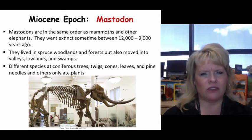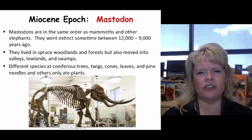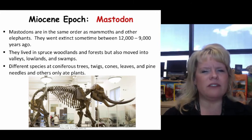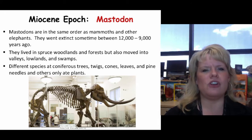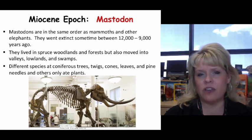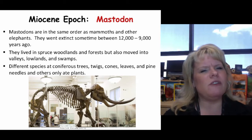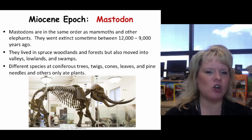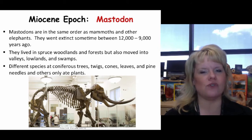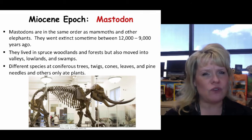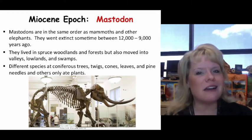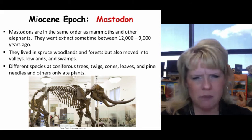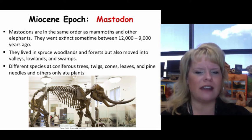Something that evolved in the Miocene and is worthy to talk about is the mastodon. These are in the same order as mammoths and elephants, and they coexisted with mammoths. They went extinct somewhere between 12,000 and 9,000 years ago — near the end of the last ice age. They lived in woodlands like spruce forests but could move into valleys, lowlands, and swamp areas. Unlike mammoths, which were grass eaters, mastodons had a different shaped tooth and straight-out tusks, compared to the curling tusks of most mammoths.